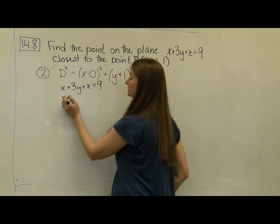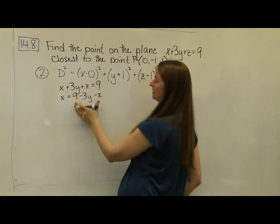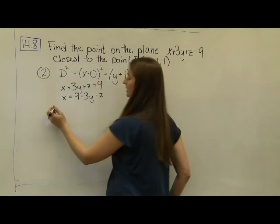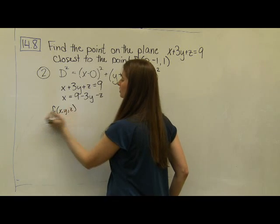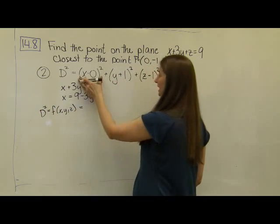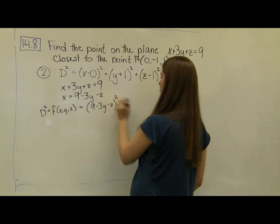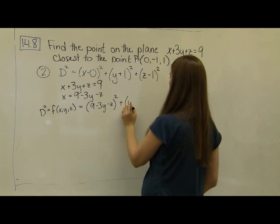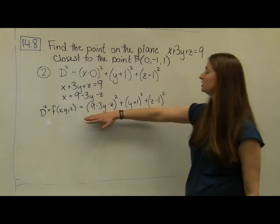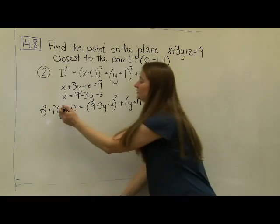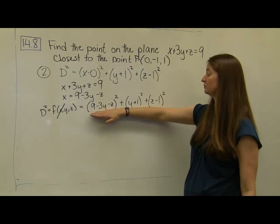I'm going to let x equal 9 minus 3y minus z, solved from the constraint, and plug that into the distance squared function. So f of x, y, z — our d-squared function — becomes (9 minus 3y minus z) squared, plus (y plus 1) squared, plus (z minus 1) squared. Instead of being a three-variable function, I've turned it into a two-variable function in y and z, and I want to find the minimum values.